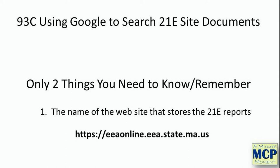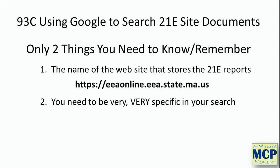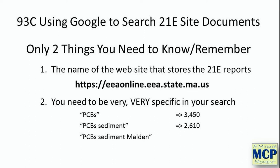Let's start with the name of the site that actually stores the reports. When I say you need to be very specific in your search, I'll show you why. One of the benefits of using Google to search these documents is that you can search for chemicals, which you can't do using EDEP or the searchable sites list. But the temptation is to just put in the chemical name. Say I'm interested in PCBs — if you just search for PCBs, you'll get over 3,400 results. That's a lot to comb through, so you need to narrow it down.